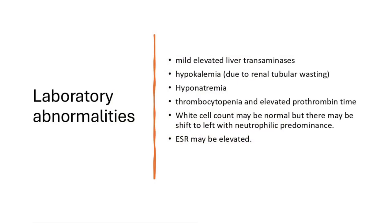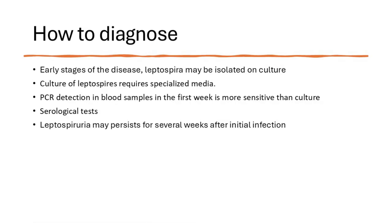Laboratory features include slightly elevated liver enzymes (in the hundreds), hypokalemia due to renal wasting, hyponatremia, thrombocytopenia with elevated PT, leukocytosis with neutrophilia, and elevated ESR. Diagnosis can be made by culture, PCR, or ELISA. Culture requires specialized media; in the first week, leptospira may be isolated from blood, urine, or tissues. PCR is done in the first week and is more sensitive than culture.